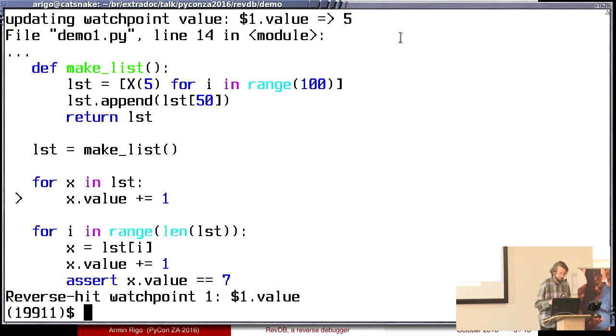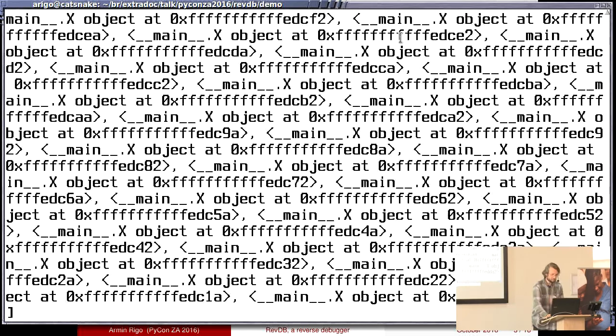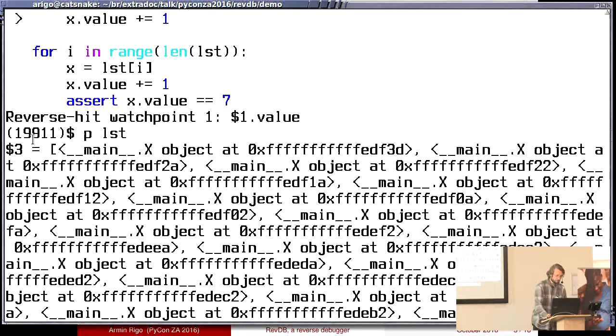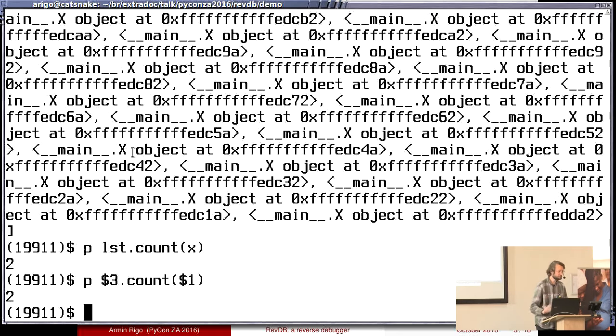This does not look correct. But we haven't found the bug so far. We have found that the bug occurs because the object $1 is showing up several times in that loop. So this list LST contains 101 objects. But I printed it so that now I know that it is $3. So $3 is the list. If I count the number of times x appears in the list, I get 2. And I would like to know, why is it 2? So I'm replacing the variables with dollars.